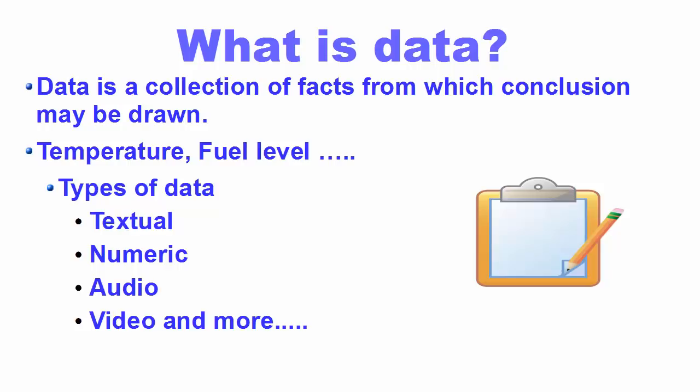Data can be represented in many forms. For example, it can be represented as text — like a name, surname, or address. It can be represented in numeric form — like someone's ID, age, temperature, or fuel level. It can also be represented in audio form, video form, or many other forms. So data can be anything that leads you to a decisive conclusion.